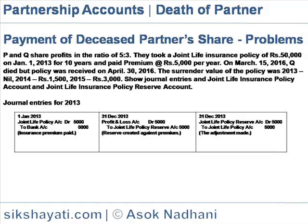Journal entries for 2013. On 1st January, joint life policy account is debited 5,000 to bank account — insurance premium paid. On 31st December, profit and loss account is debited 5,000 to joint life policy reserve account. The amount of premium is transferred to the reserve account.